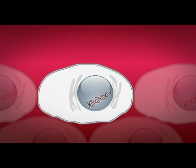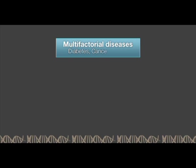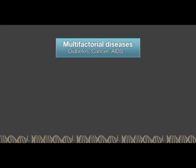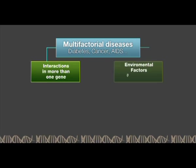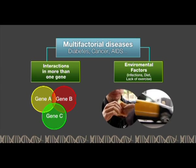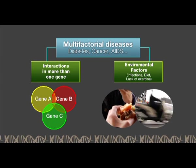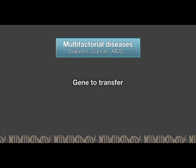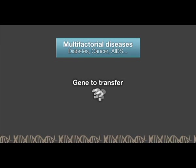However, there are diseases such as diabetes, cancer or AIDS whose origin is more complex, either because they result from the interactions of more than one gene or because they are associated with environmental causes. In these cases, the choice of the therapeutic gene may be more challenging, and scientists will depend on previous studies and knowledge of the disease to choose the appropriate gene or genes to be transferred.